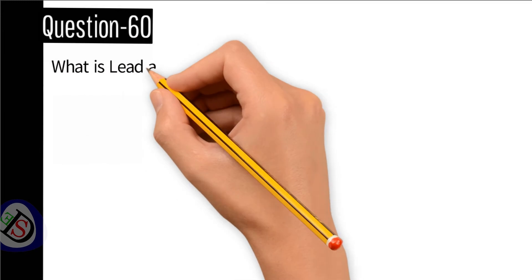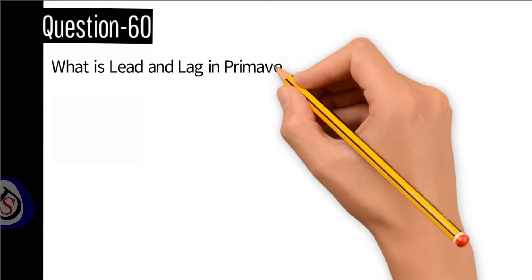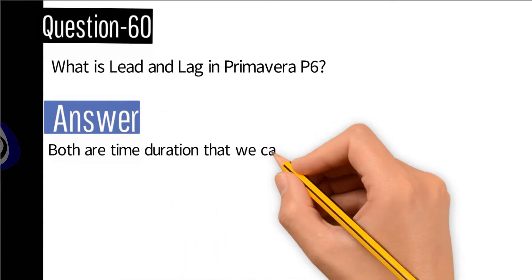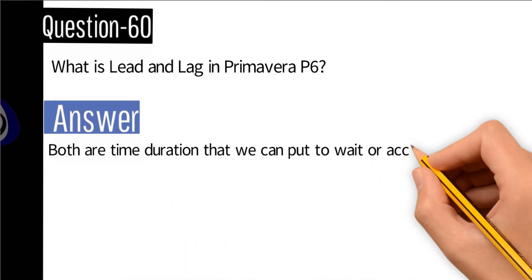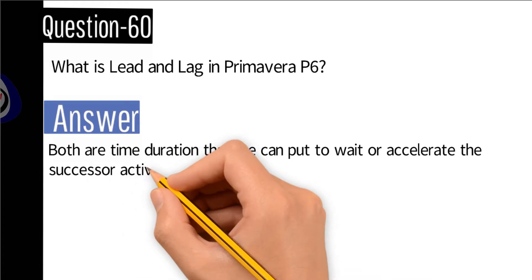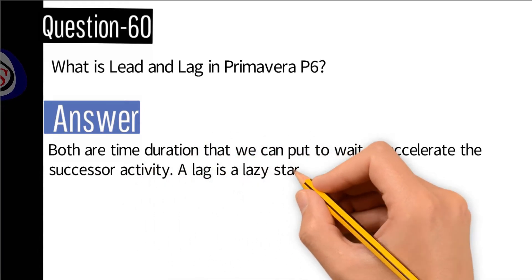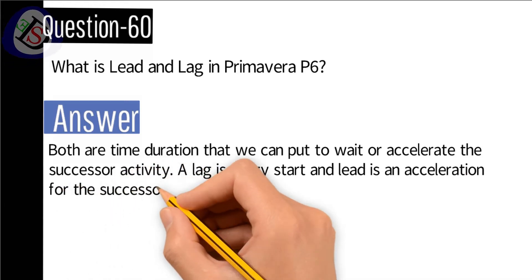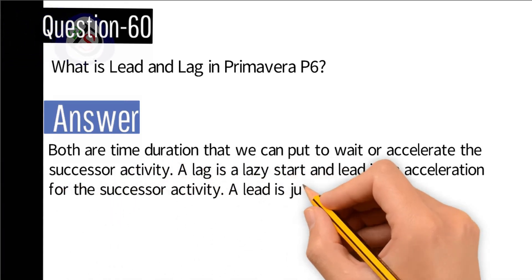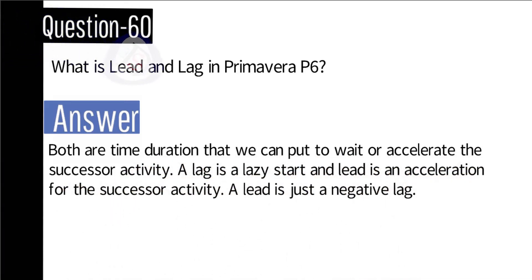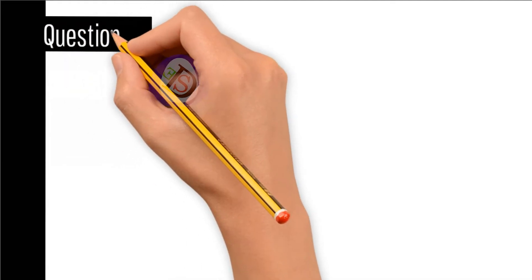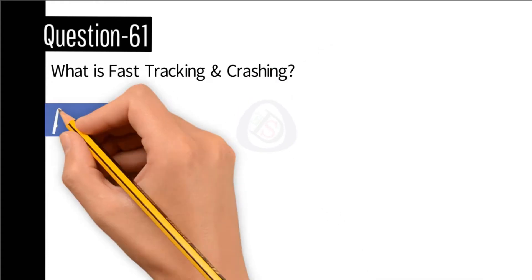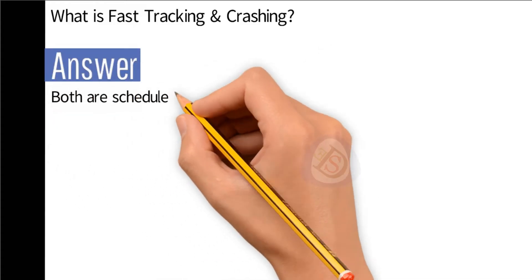Question number 60: What is lead and lag in Primavera P6? Answer: Both are time durations that we can apply to delay or accelerate the successor activity. A lag is a delayed start and a lead is an acceleration for the successor activity. A lead is simply a negative lag.